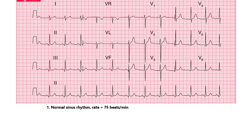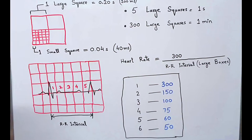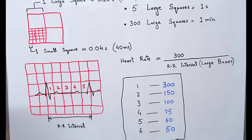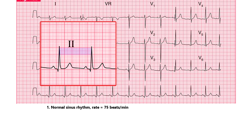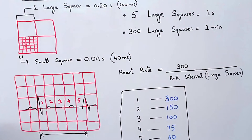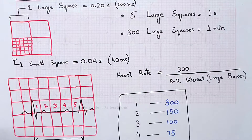Heart rate calculation formula is already discussed. It is calculated by the formula: 300 divided by the number of large boxes in an RR interval. Here we have 4 large boxes in an RR interval, so heart rate equals 300 divided by 4, which equals 75 beats per minute. The magic number 300 comes from the fact that ECG paper speed is such that 300 large boxes are present in 1 minute.